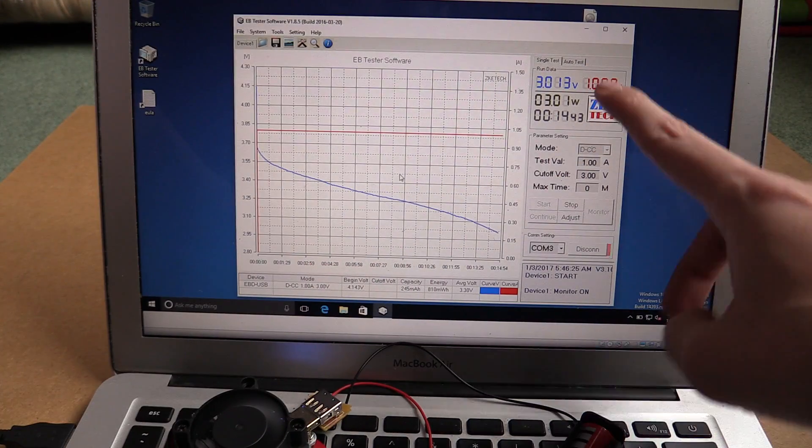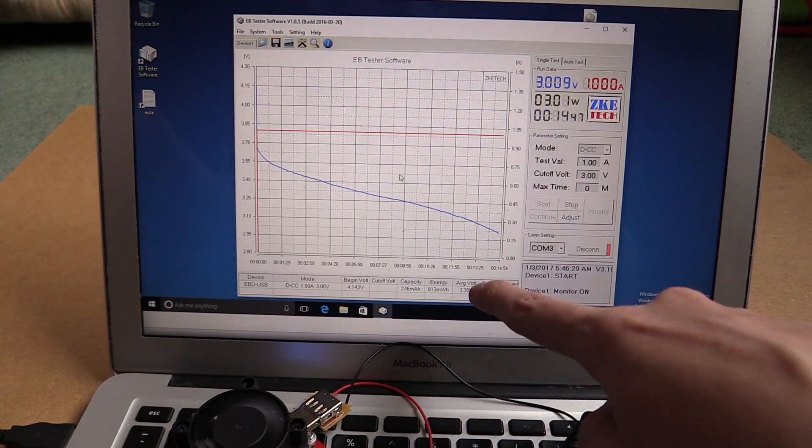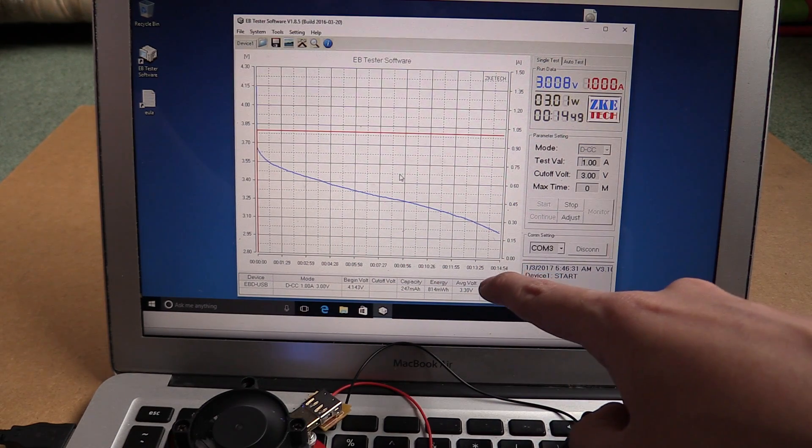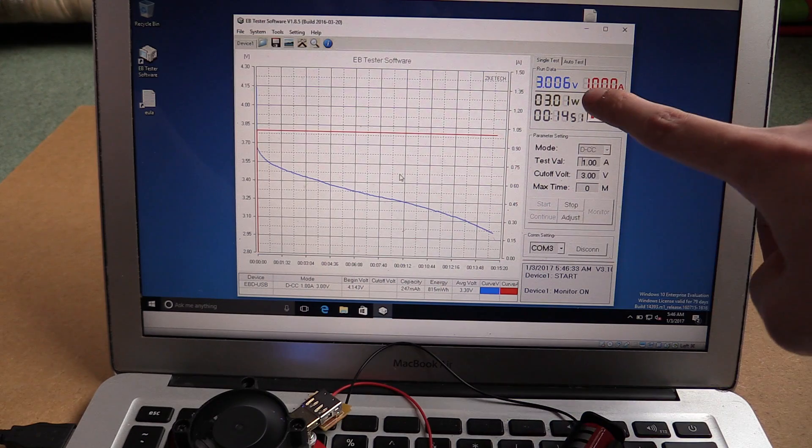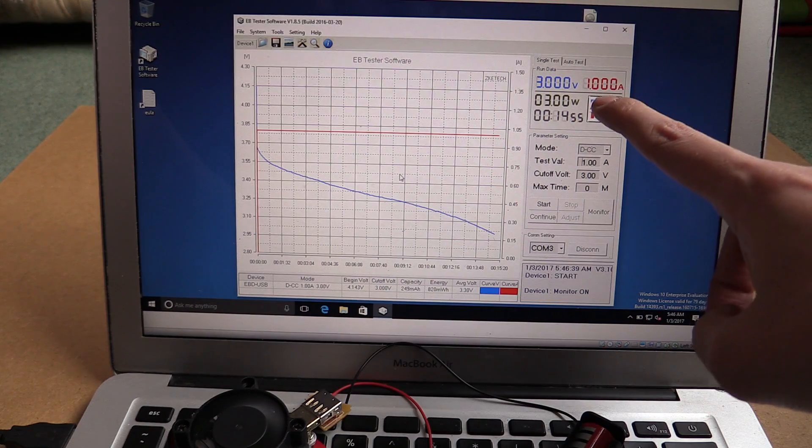Well, this is really strange. We're about to hit a cutoff voltage of 3 volts, but I'm not seeing the kind of capacity that we expected. It's only been running for a short time. Let's just see it drop down to 3 volts, and then I'll read out the results. Here we go, and the load is turned off.